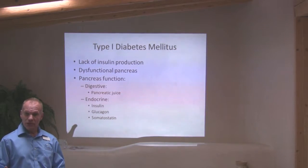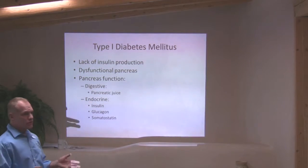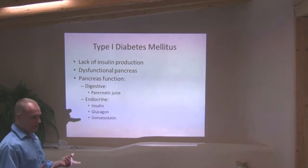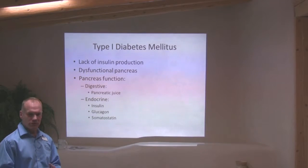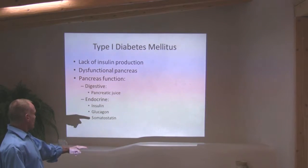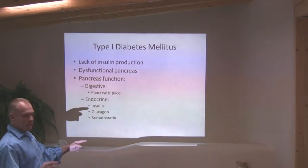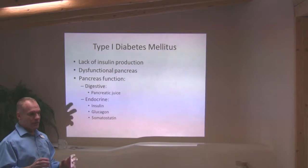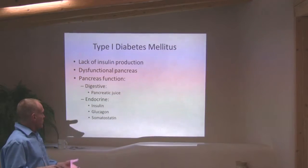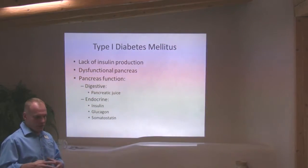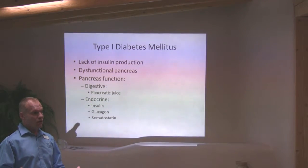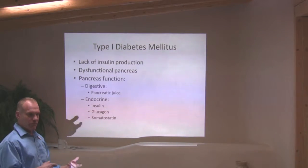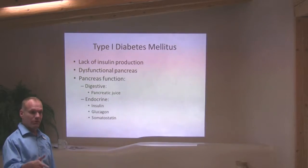The pancreas is the organ that makes insulin, and insulin is the key to how diabetes works. The pancreas has two main functions: a digestive function and an endocrine function. Through the digestive function it makes pancreatic juice — a brew of enzymes that digest proteins. It also creates insulin, glucagon, and somatostatin. Insulin causes cells to absorb sugar from the bloodstream. Glucagon goes to the liver and tells it to release sugar stores. If someone comes in with low blood sugar, I can give them a shot of glucagon to pop their blood sugar back up.